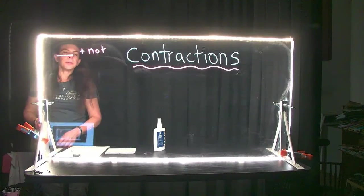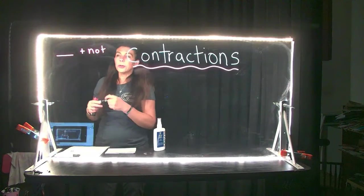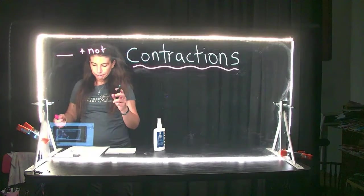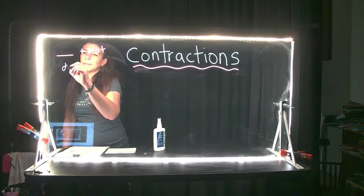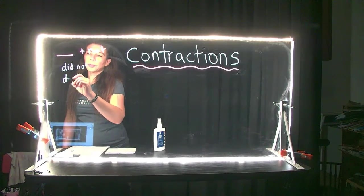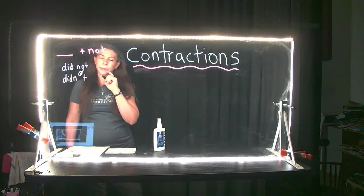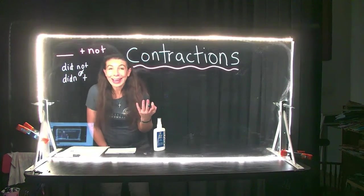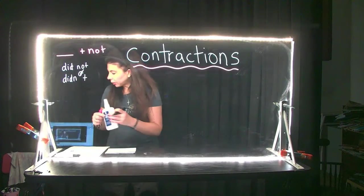So third grade, when we add 'not,' generally you add the word — like 'did not': the N goes with the first word, the O becomes the apostrophe, and then the T — didn't. Now what if we want to use two words where 'is' is one of the words?